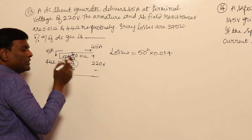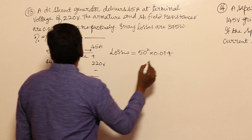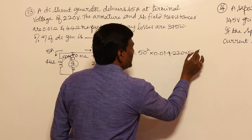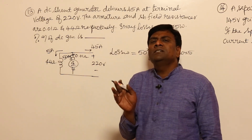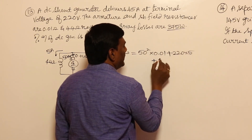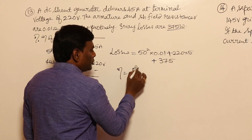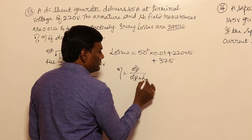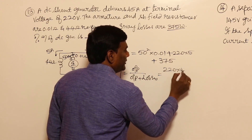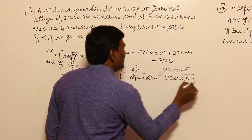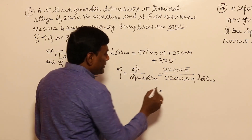For shunt field loss, you can use V×I = 220 × 5, or I²R = 5² × 44 - both are fine. Add 375 stray losses to get total losses. Efficiency = output / (output + losses) = (220 × 45) / (220 × 45 + total losses). Efficiency comes out to 86.84 percent. Problem solved.